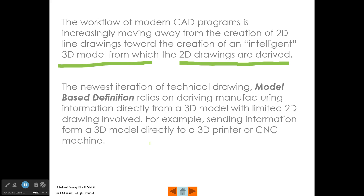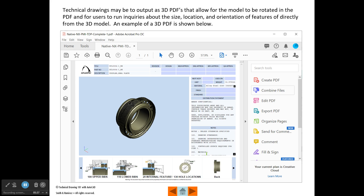A good example of model-based definition is sending information from a 3D model directly to a 3D printer or a CNC machine. Modern technical drawings that use model-based definition may be output as 3D PDFs. This is actually a screen capture of a three-dimensional PDF. In the PDF, you can pick on the model, hold down with your mouse, and rotate the model, or click on the thumbnail images included there. You'll see the multi-views like the front, the top, the side. You can also run inquiry commands to find out the sizes of features, how many there are, and fabrication notes.